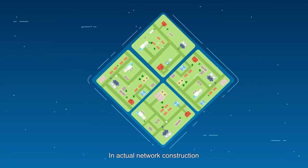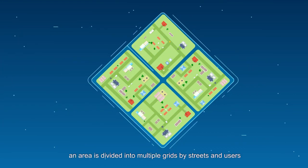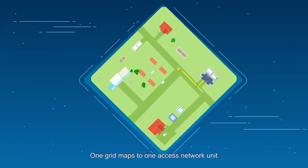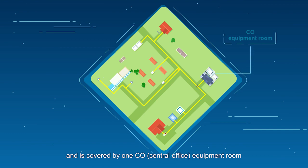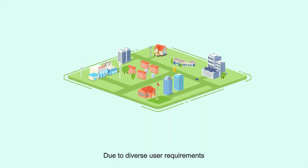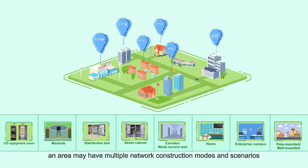In actual network construction, an area is divided into multiple grids by streets and users. One grid maps to one access network unit and is covered by one CO equipment room. Due to diverse user requirements, an area may have multiple network construction modes and scenarios.